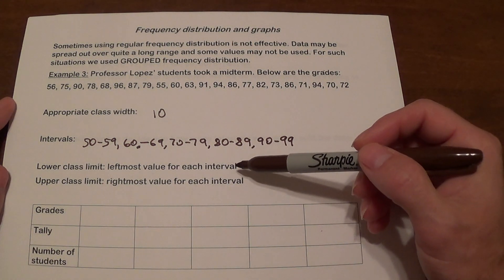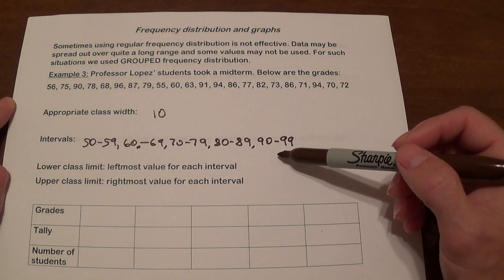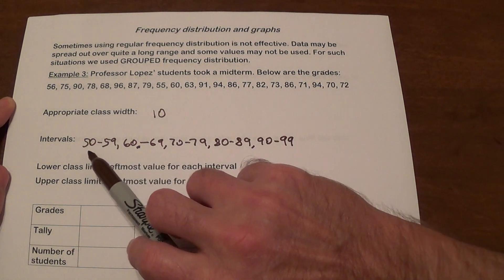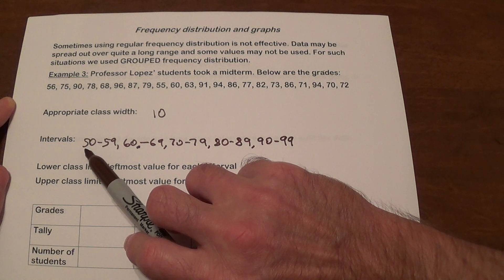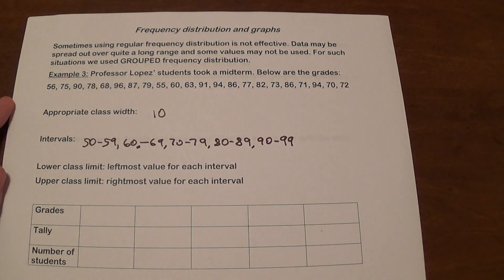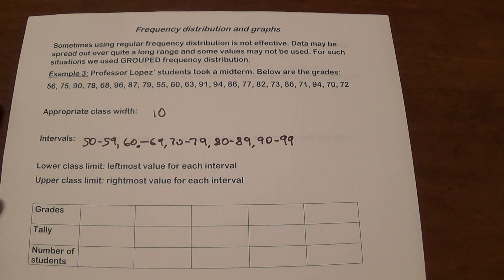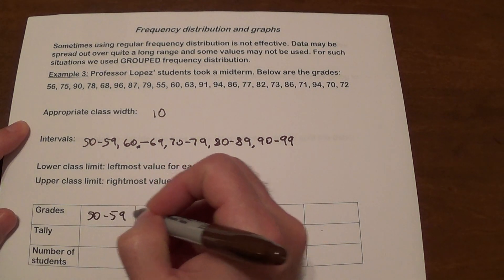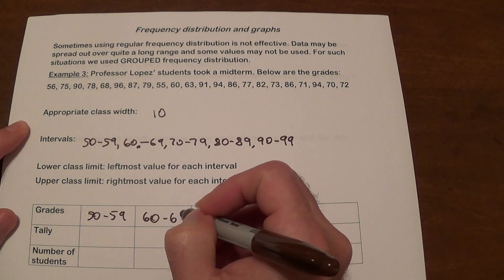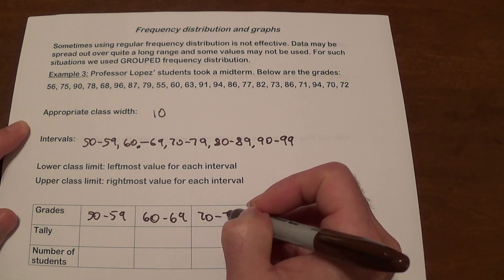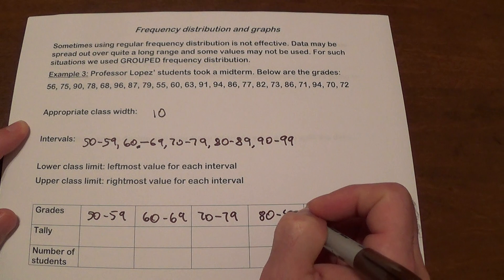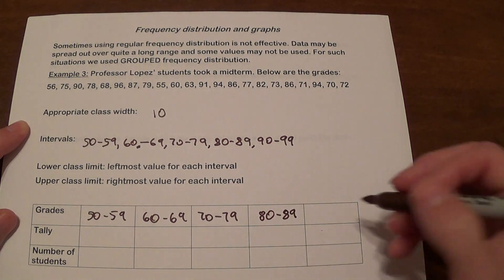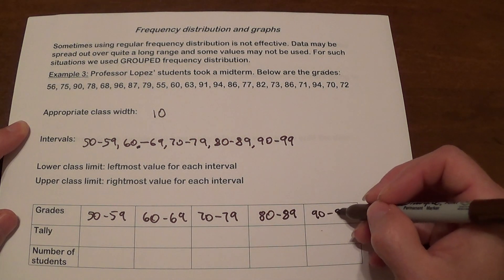For each interval that we have here, we have what's called the lower class limit and the upper class limit. So for 50 to 59, 50 would be the lower class limit and 59 is the upper class limit. All right, so let's start filling it in this table. 50 to 59, 60 to 69, 70 to 79, 80 to 89, and then we're going to have 90 through 99.